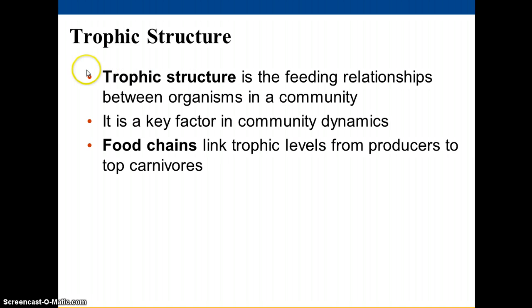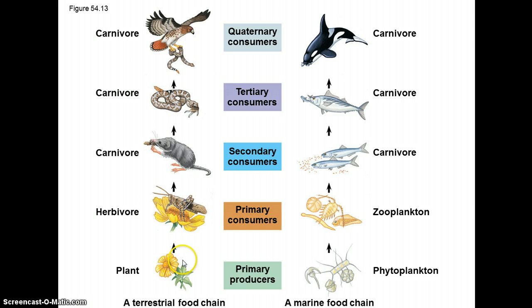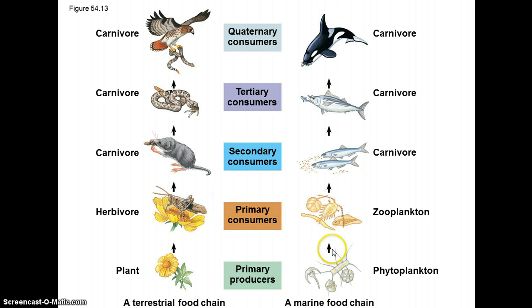Communities can also be characterized by what we call their trophic structure — the different levels in that community. The typical way to think of this is a food chain, where you've got your producers on the bottom: your plants, algae, and such — things that are photosynthesizing and making food. These are the autotrophs, and the rest are the heterotrophs. Among the heterotrophs, you have your herbivores, your primary consumers, then your carnivores or omnivores at the second, third, and finally fourth level consumers — the organisms at the top of the food chain.